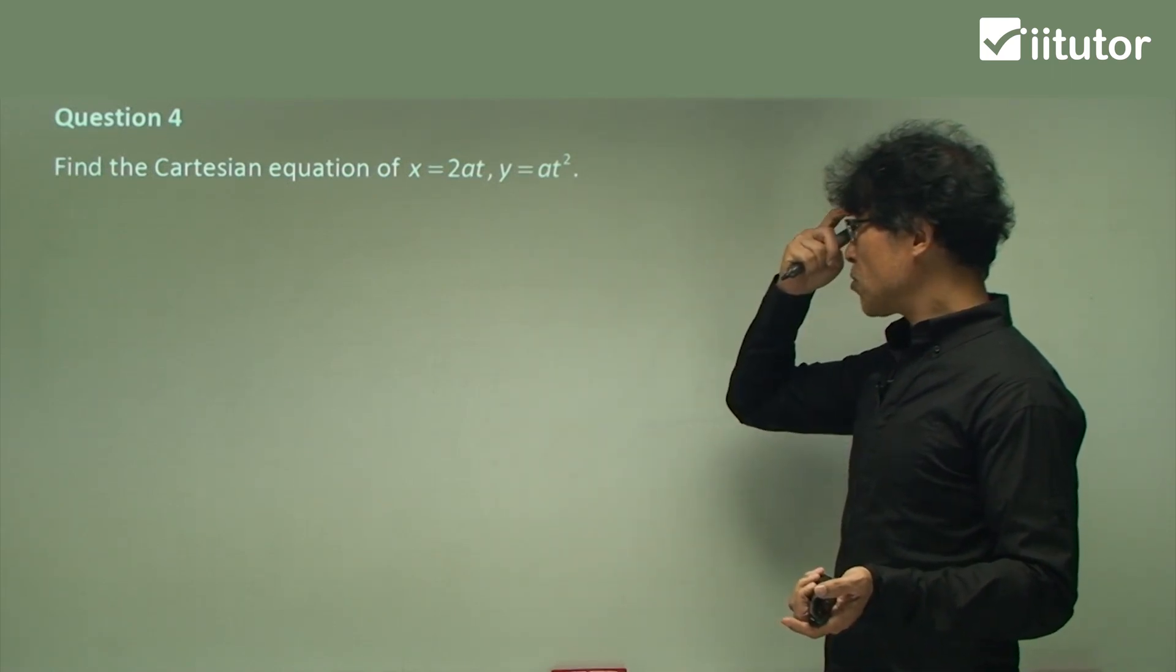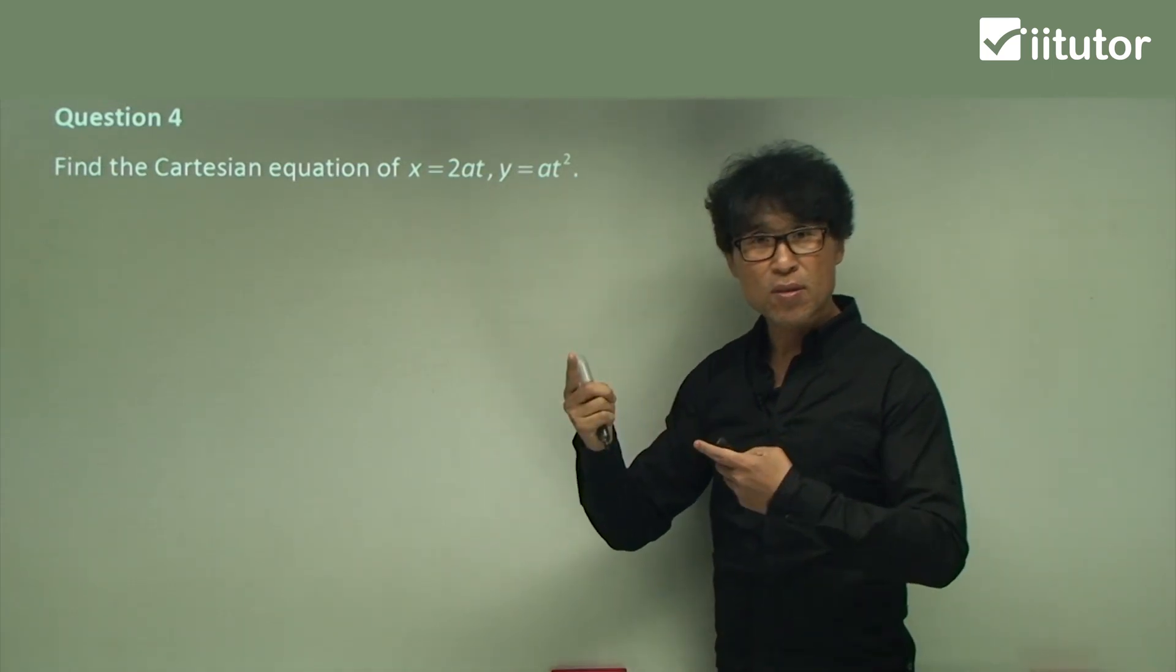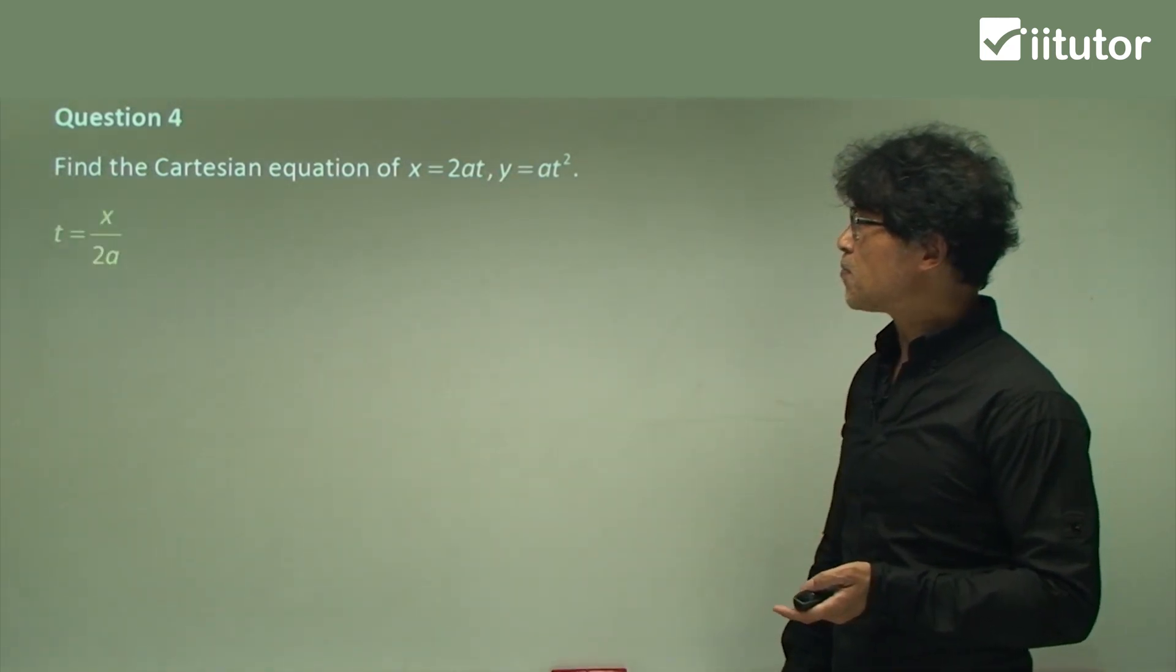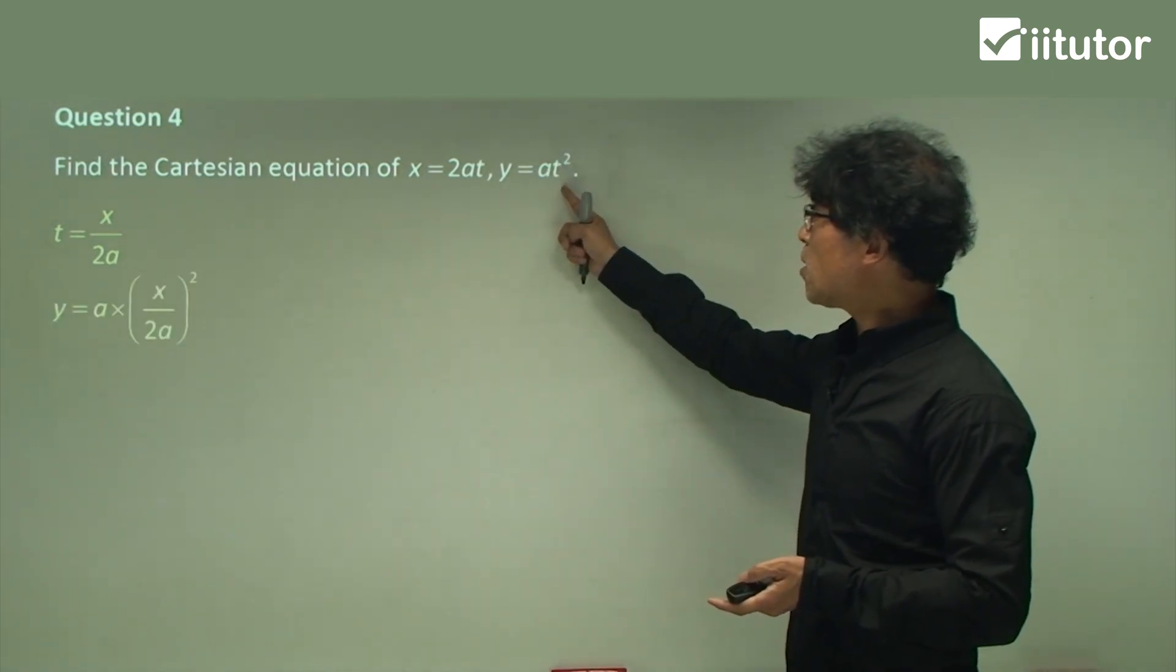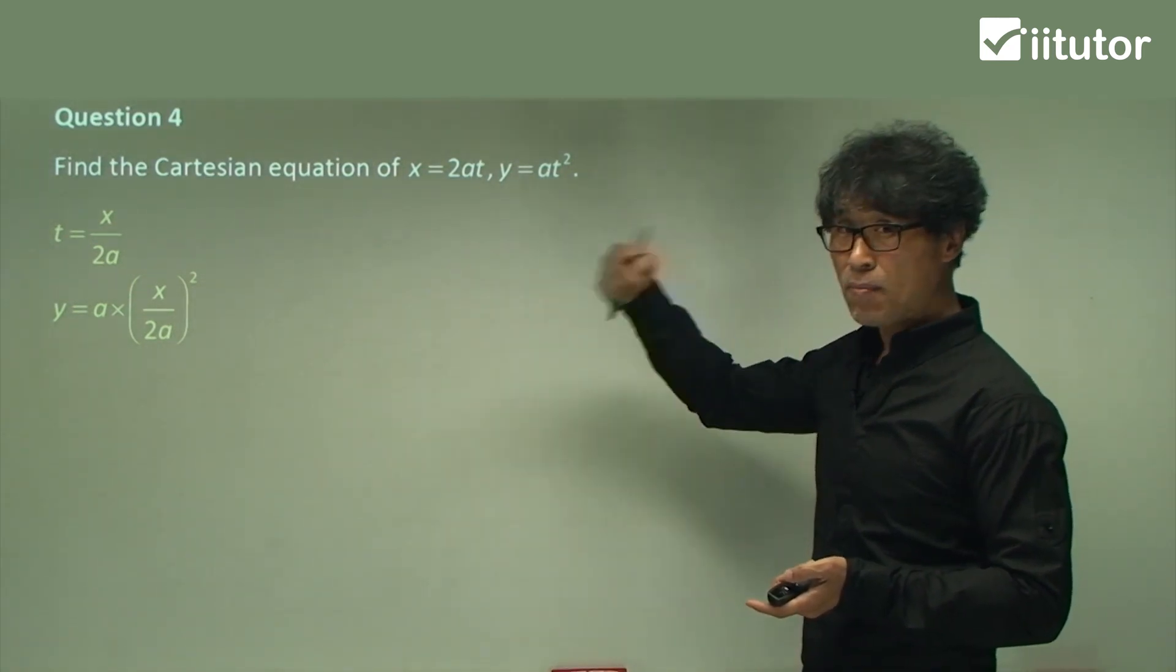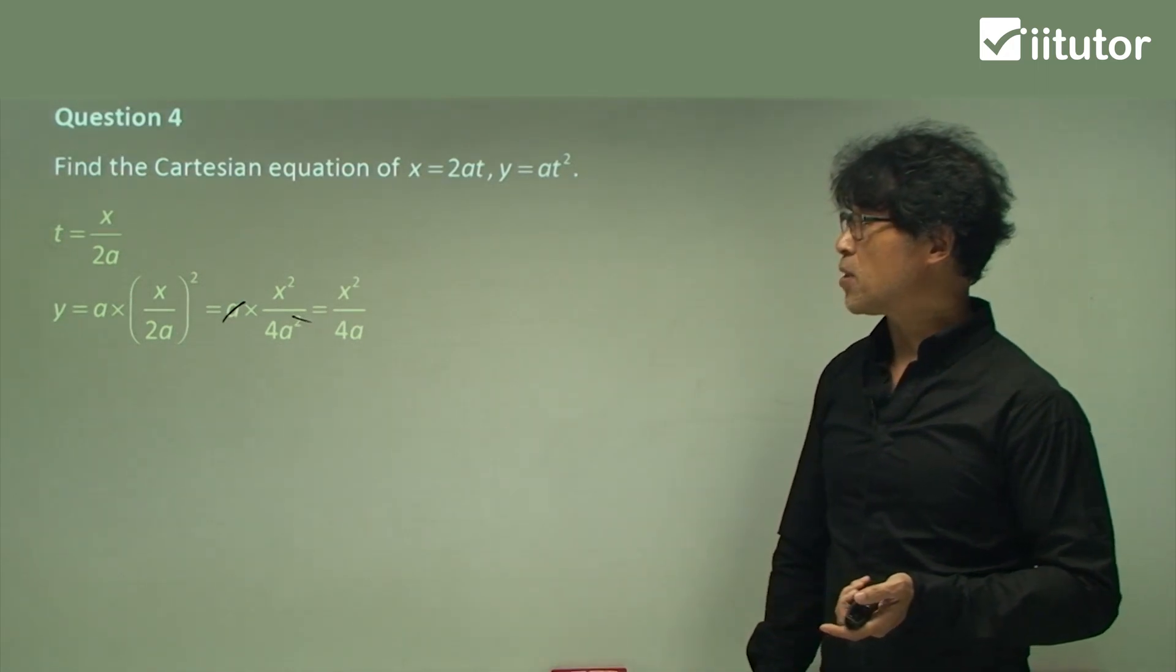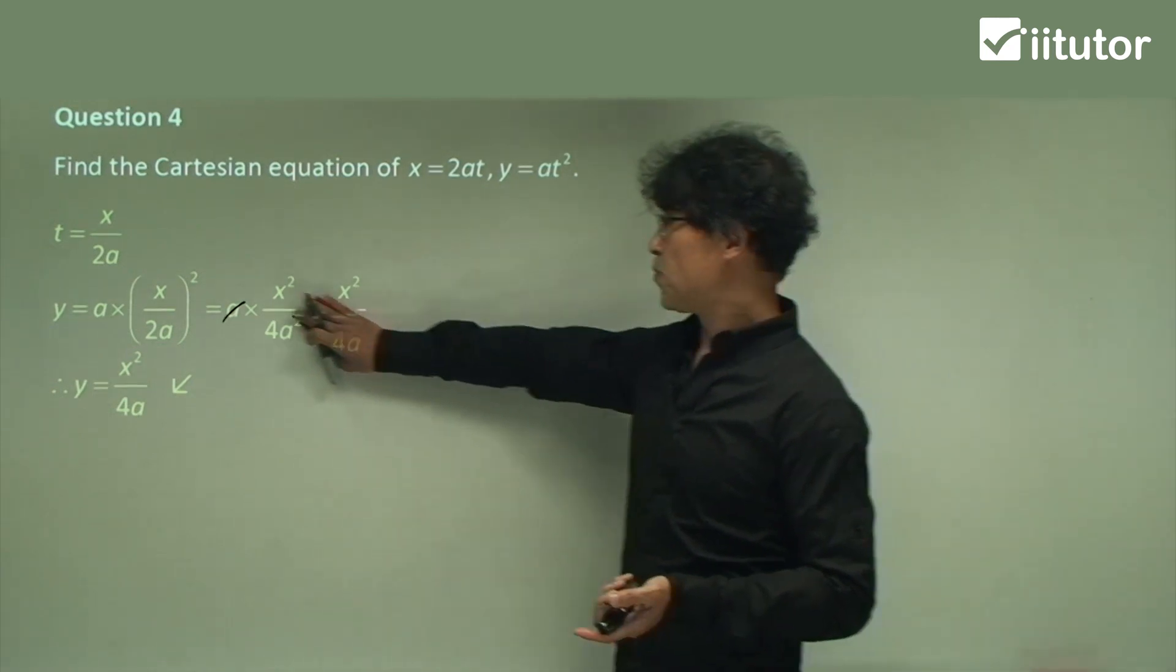Question four. Well, these are actually a parametric equation of the parabola. So you will see this parametric equation many times in the near future. So please bear these two equations in your mind. Same story. Make t the subject. So t is x on 2a. Sub that t into here. Cartesian equations already. So simplify to make your perfect answer. Expand and cancel a and a. That's pretty much it. So that's the answer. That's the Cartesian equation.